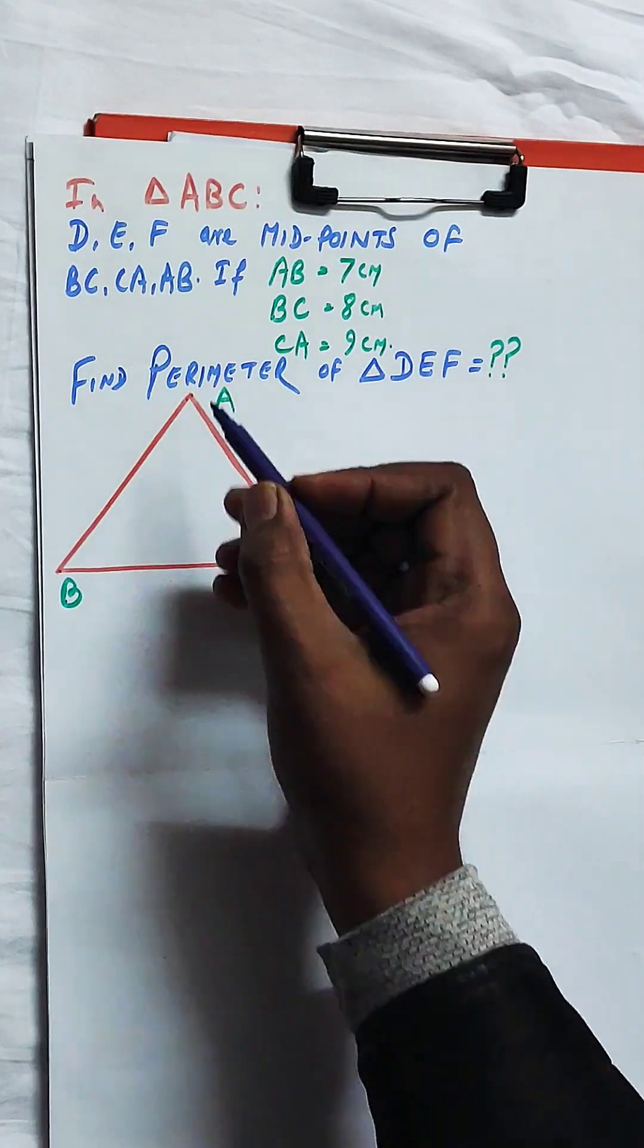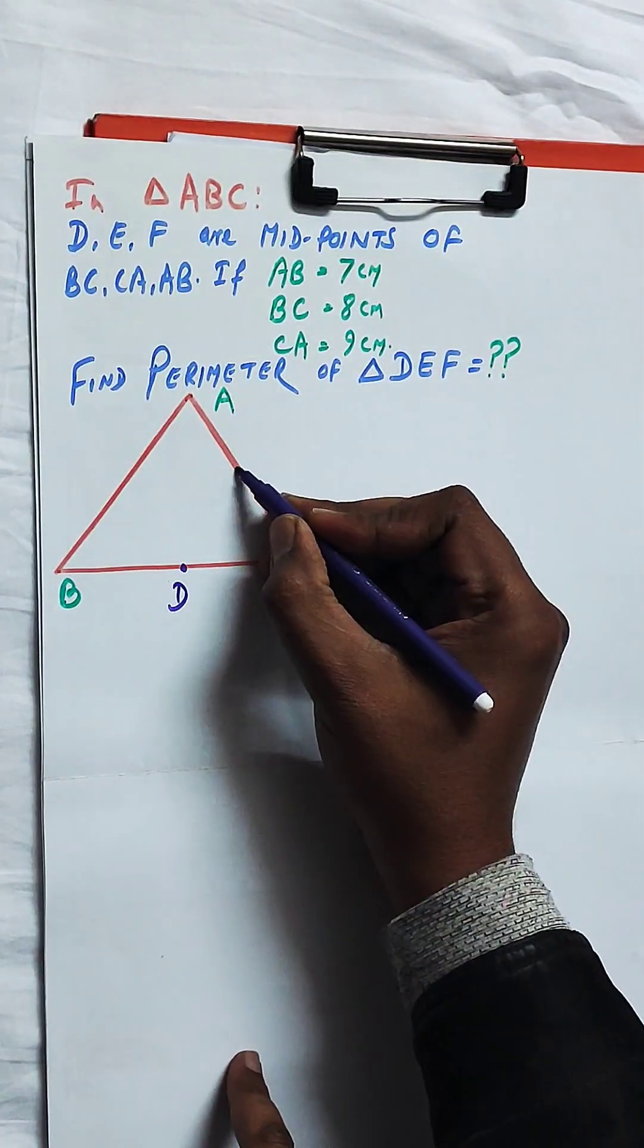As per the given question, DEF are the midpoints of BC, CA and AB.